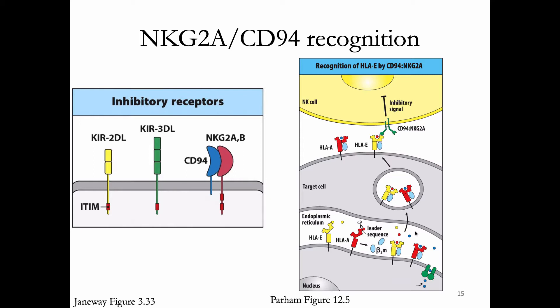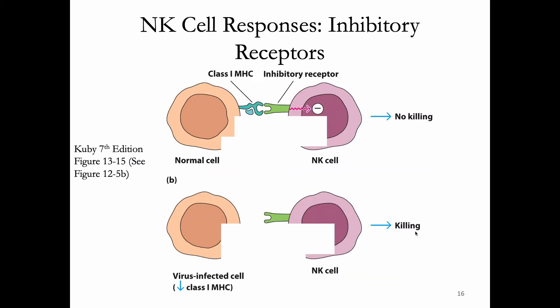So HLA-E is an MHC that presents a precursor part of MHC — it presents a leader sequence from another MHC molecule. And that receptor also can lead to inhibitory receptor engagement and no killing by the NK cell.